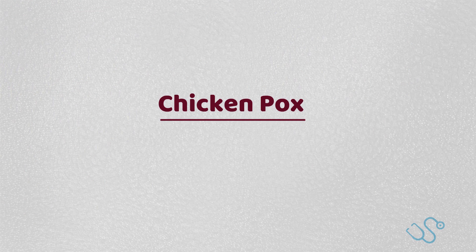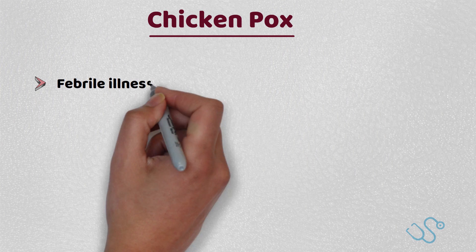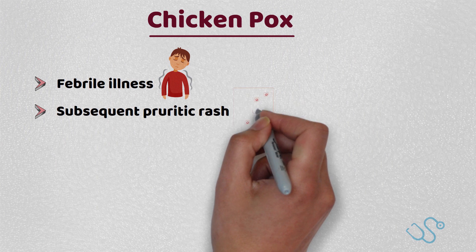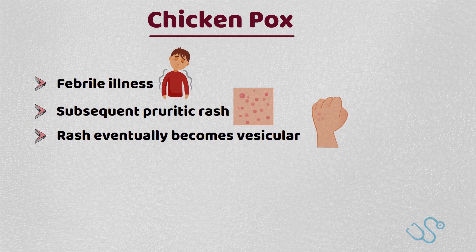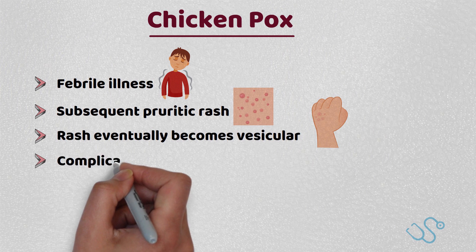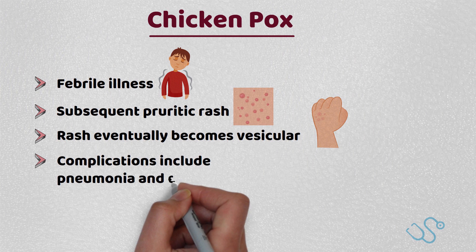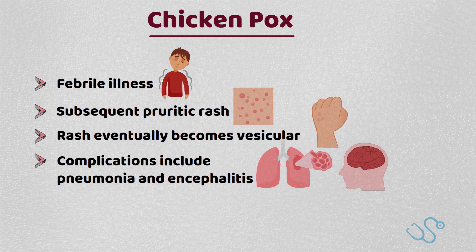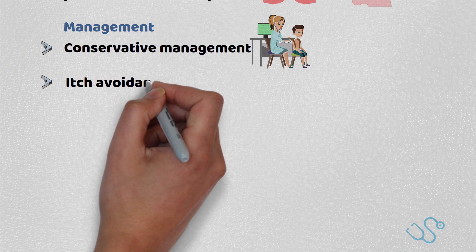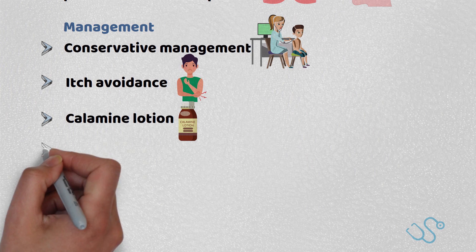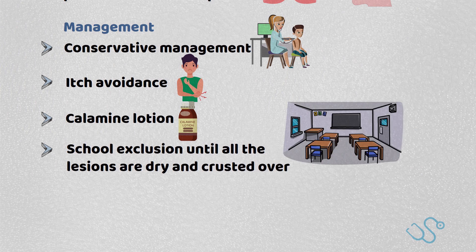Chickenpox often starts as a febrile illness with a subsequent pruritic rash on the body that usually starts on the head or torso. The rash eventually becomes quite vesicular. Some rare but serious complications can occur including pneumonia and encephalitis. Immunocompromised and neonatal patients are often managed with immunoglobulins if exposed, or IV acyclovir if the rash appears. Otherwise, management is often conservative with itch avoidance and calamine lotion, however school exclusion is advised until all lesions are dry and crusted over.